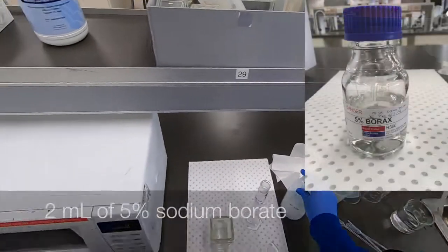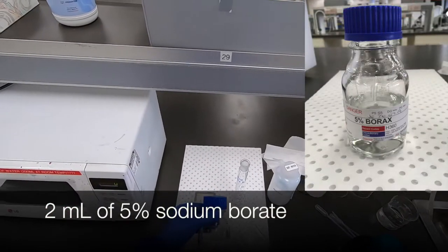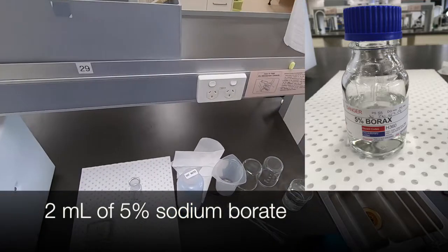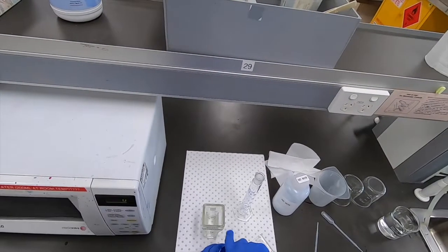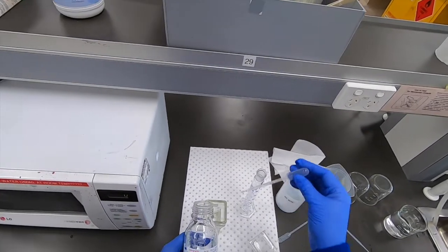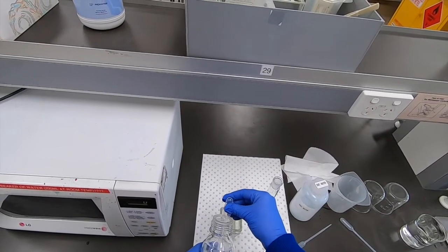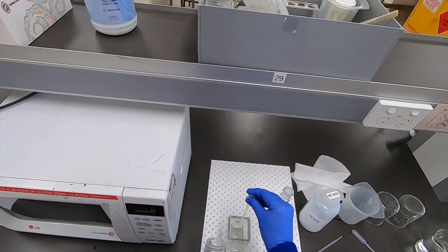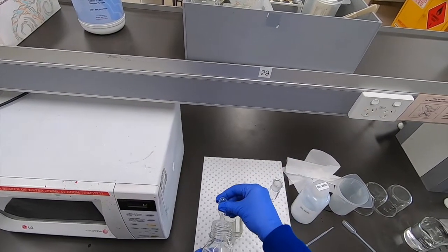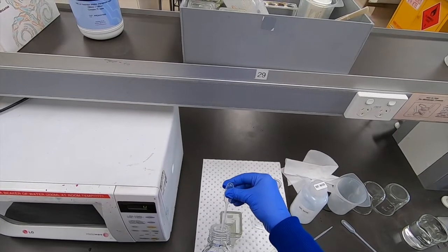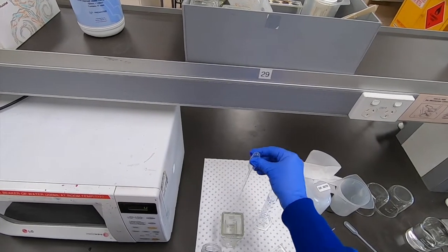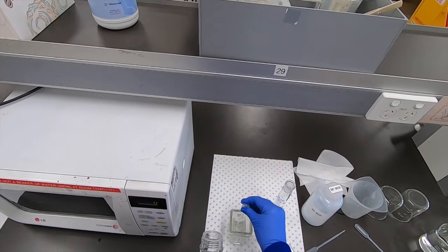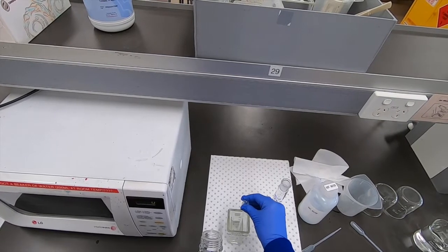We then render the solution slightly alkaline by adding 2ml of 5% sodium borate or borax as it's often called. And then just give that a good mix before going to the next step.